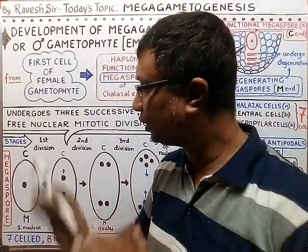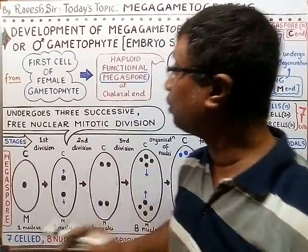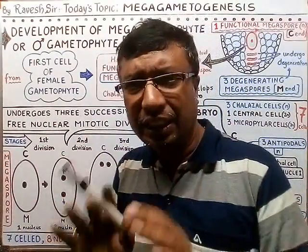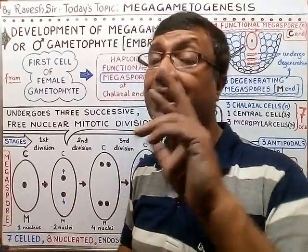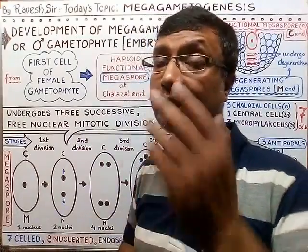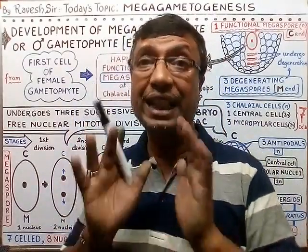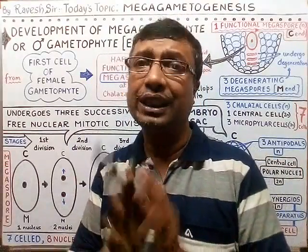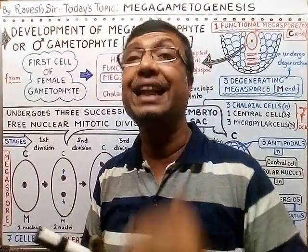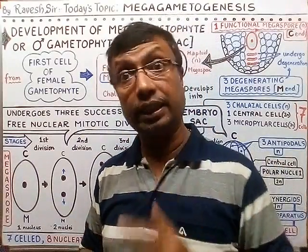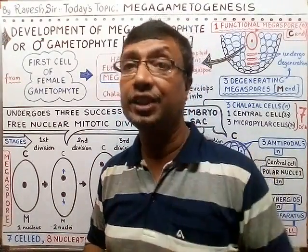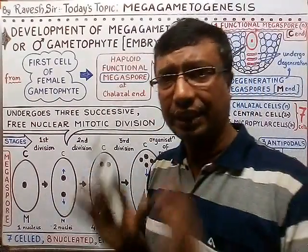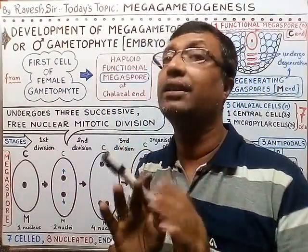The megaspore has one central haploid nucleus. This single nucleus will undergo three successive nuclear mitotic divisions. So the single nucleus keeps dividing — three times — and from three nuclear divisions, finally eight nuclei are produced inside the megaspore. These eight nuclei will then get organized in a particular manner. Importantly, this is a free nuclear mitotic division, meaning only the nucleus divides and no cell wall is formed during these divisions.